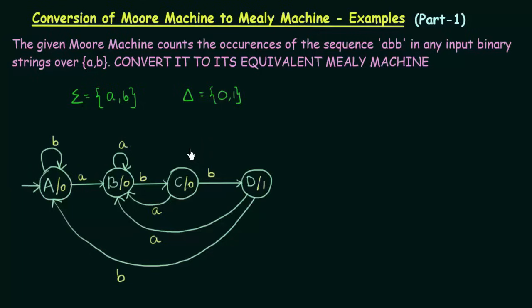We have already designed this Moore machine in one of our previous lectures, where it was designed to count the occurrences of the sequence ABB. We want to count how many times ABB occurs in any input binary strings over AB. Our inputs are A and B, and our outputs are 0 and 1. Whenever the sequence ABB is encountered, we printed a 1, and in all other cases we printed 0. At the end, we counted how many 1's there were, and that many occurrences of ABB was encountered.